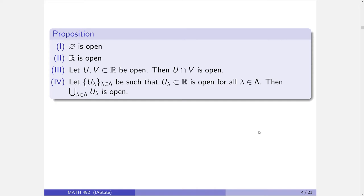Let's look at open sets a little more closely and see if we can find some characteristic properties. We're going to prove the following facts about open sets: the empty set is open, all of the real numbers are open, given any two open sets the intersection remains open, and given any collection of open sets their union is open. Recall: intersection is what's in both U and V, and union is what belongs to at least one U-sub-alpha.